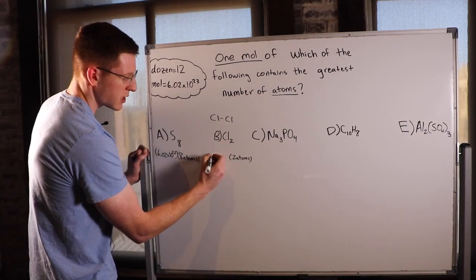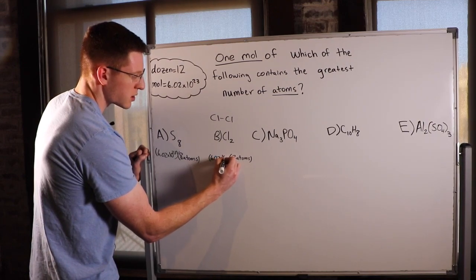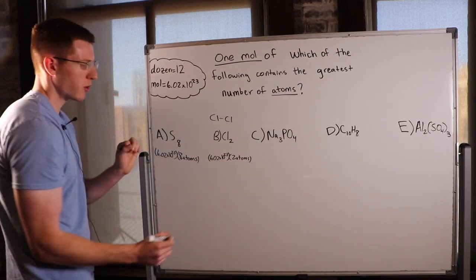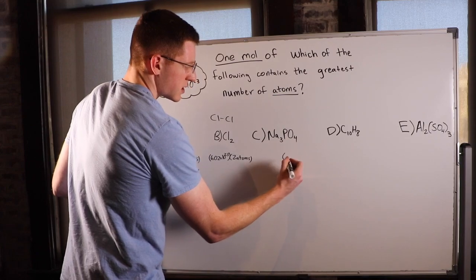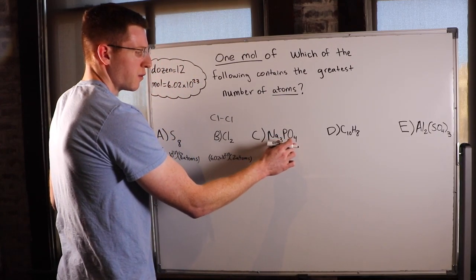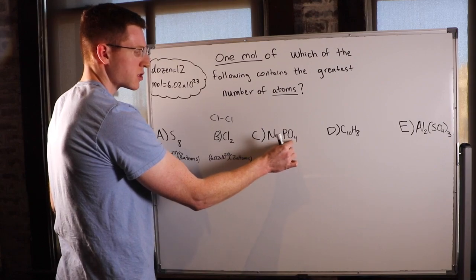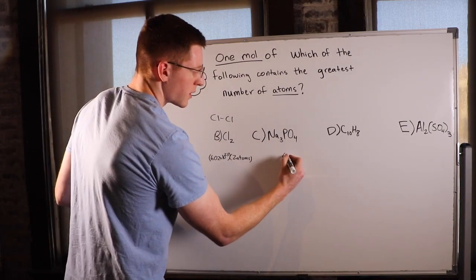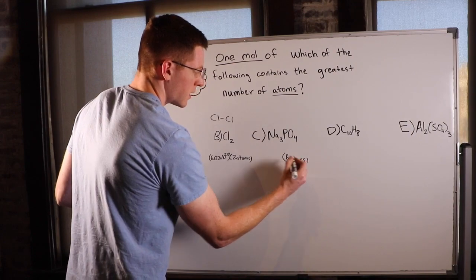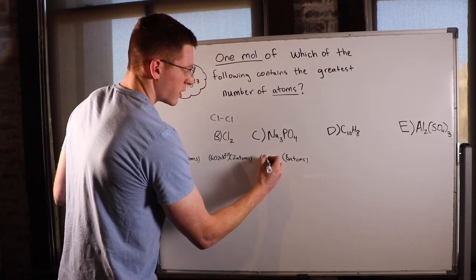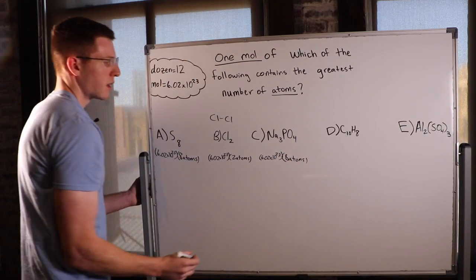We don't just have one Cl2 — we have an entire mole of Cl2, which is a massive amount: 6.02 times 10 to the 23rd of those. We can continue on with the same approach. Na3PO4 has three sodiums plus one phosphorus plus four oxygens, so that's eight atoms per individual molecule. And remember, we have 6.02 times 10 to the 23rd of those molecules.